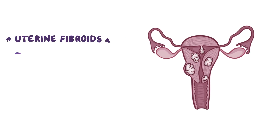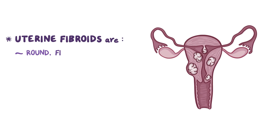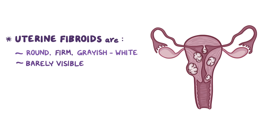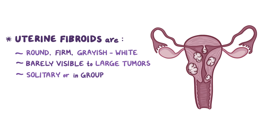Uterine fibroids are round, firm, and grayish-white in color, and they can range from barely visible lumps to large tumors that can be felt on the outside of the body. Sometimes they're solitary, but they can also develop in groups. They're benign, so they don't invade neighboring tissues or spread to other parts of the body.